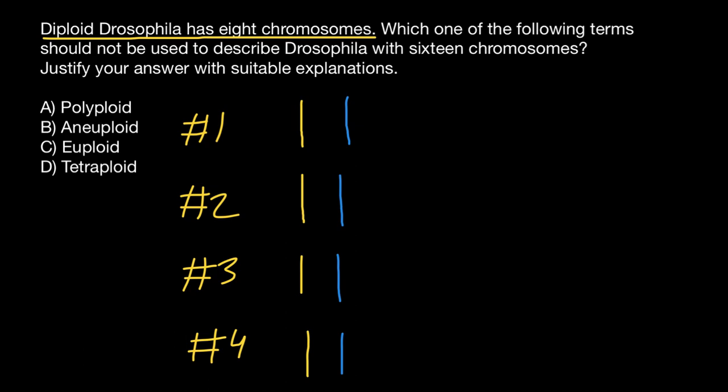Imagine this organism got from the mother's side one extra chromosome number three. We call this trisomy of chromosome number three. Comparing with humans, for example, it can be trisomy of chromosome number 21 — we call such a condition Down syndrome.